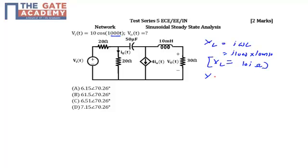Second thing is, let's find out the value of XC which is 1 upon J omega C. Again, omega is 1000. Capacitance is given as 50 microfarad. So my XC will be equal to minus 20J ohm.